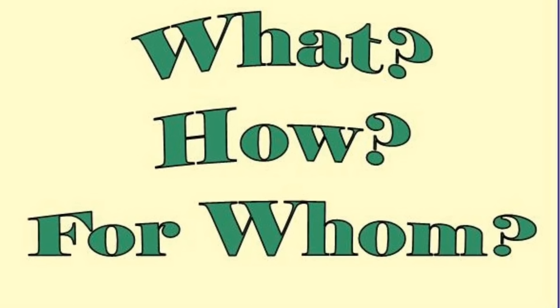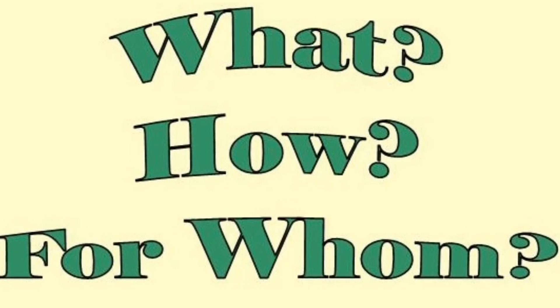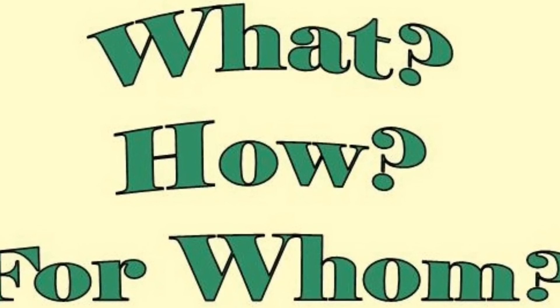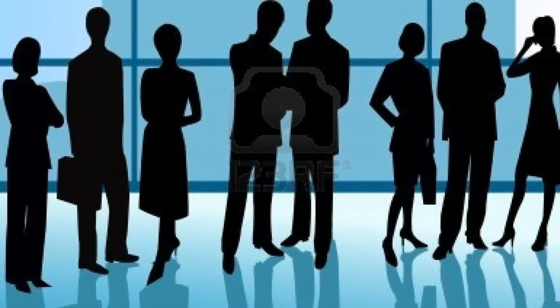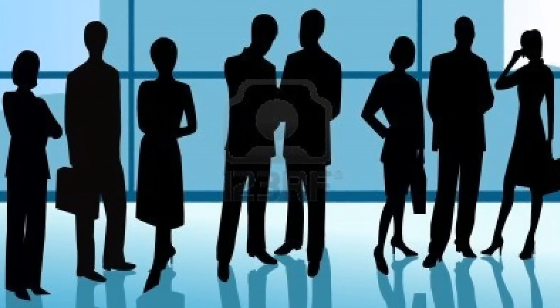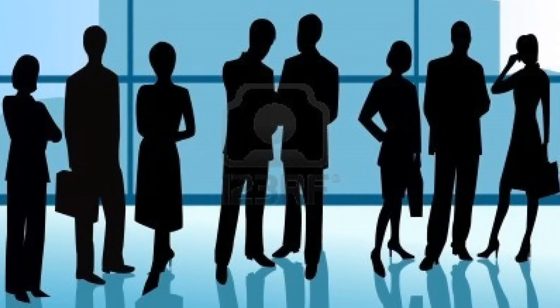An economic system is determined by how an economy answers three economic questions: what to produce, how to produce, and for whom to produce. A market economic system is a type of economic system where private sectors, which are organizations controlled by individuals, are fully in charge of answering the three economic questions and are able to make all the decisions.